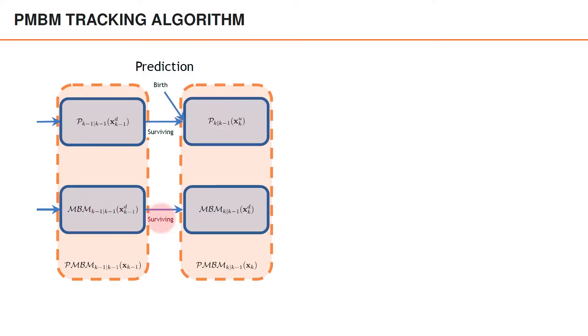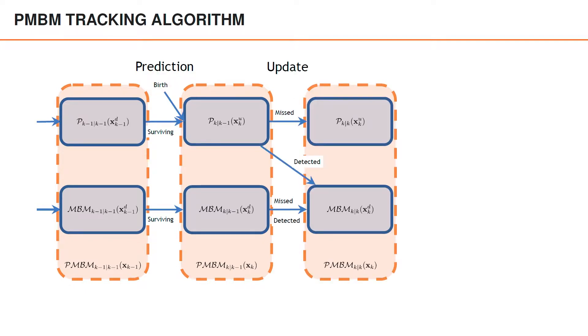In the prediction, we have surviving detected objects and surviving undetected objects. And we add birth intensity to the Poisson point process for the undetected objects. In the update, we have undetected objects that remain undetected, and then we have objects detected for the first time, which then become new detected Bernoullis. And for the detected objects, we have both misdetections and detections.